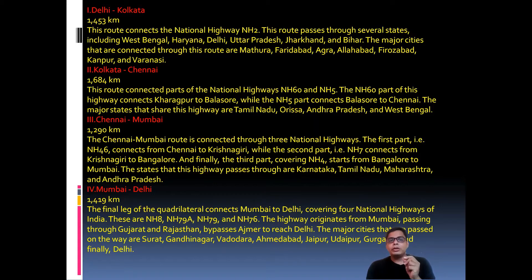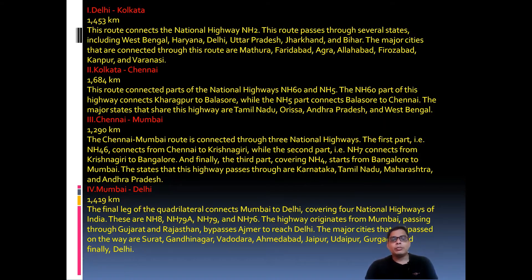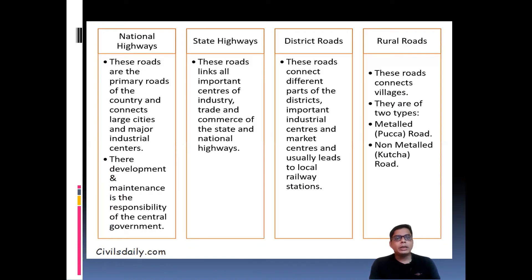So these are the four legs of the Golden Quadrilateral — Delhi to Kolkata, Kolkata to Chennai, Chennai to Mumbai, and Mumbai to Delhi — connecting all the major cities. This entire network is called the Golden Quadrilateral.